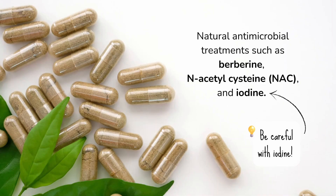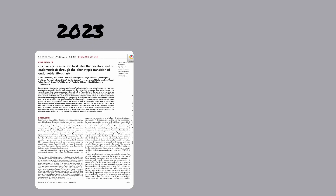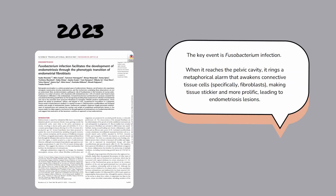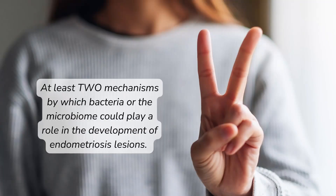Since that 2018 paper, there's been a newer 2023 paper linking bacteria to endometriosis, but via a different mechanism. This research found that fusobacterium infection of endometrial cells activates growth factors and fibroblasts, which promote endometriosis lesions. In an animal study, they were able to shrink lesions with antibiotics. So there are at least two mechanisms by which bacteria or the microbiome could play a role in the development of the serious type of endometriosis lesions — and there are probably more mechanisms — making the gut microbiome a great target for treatment.